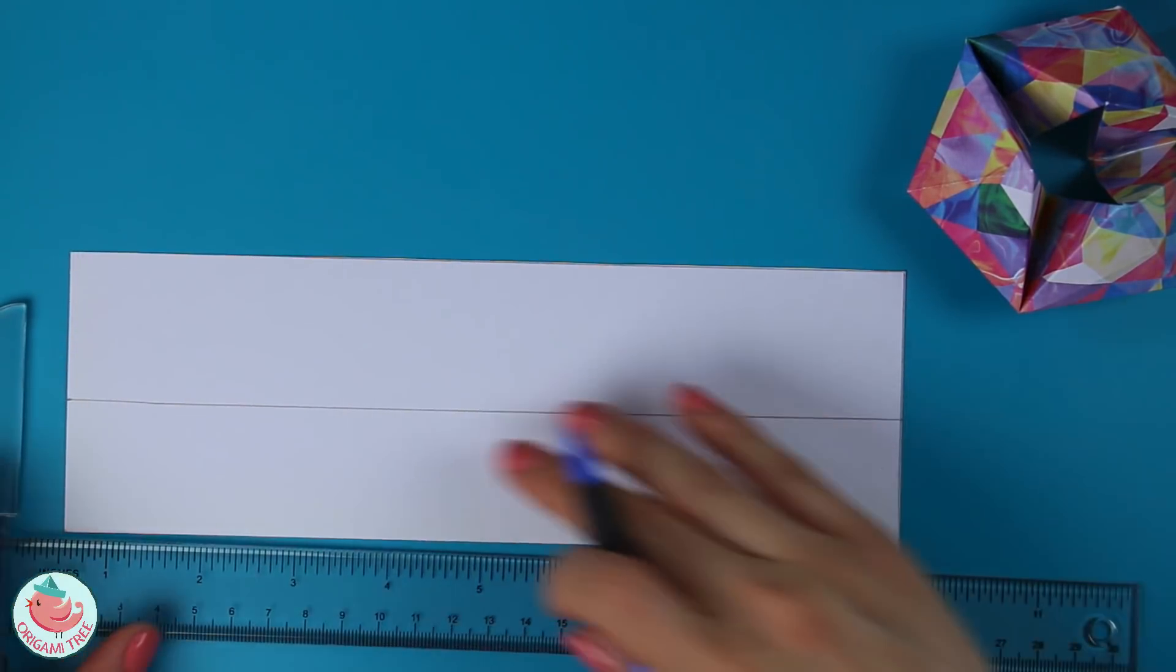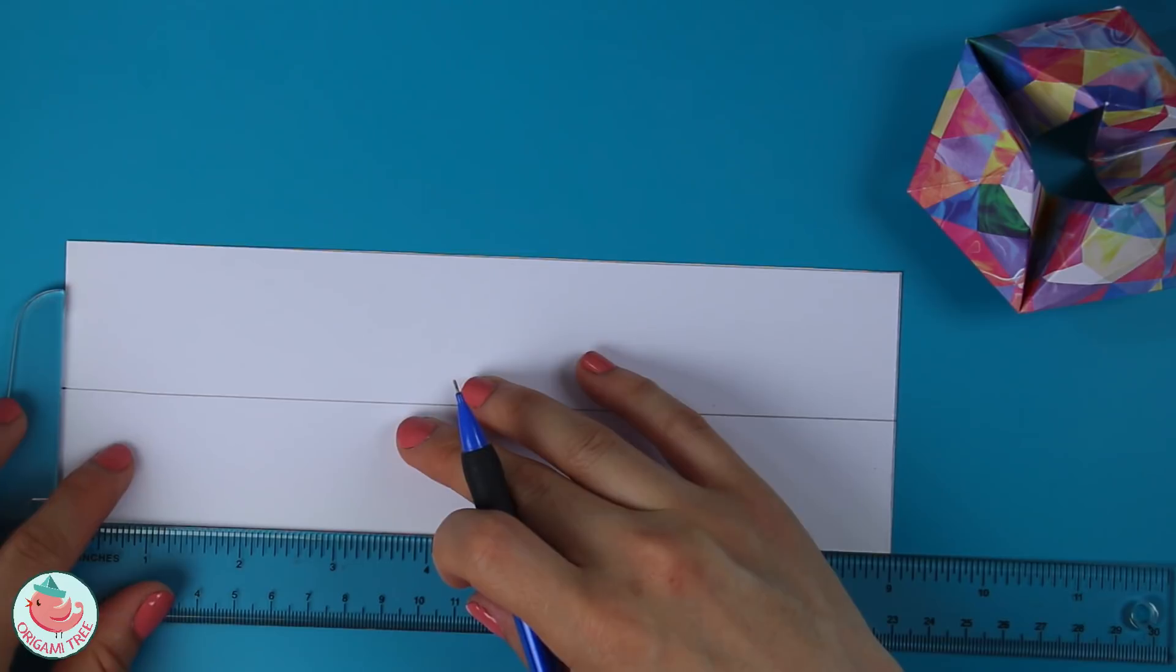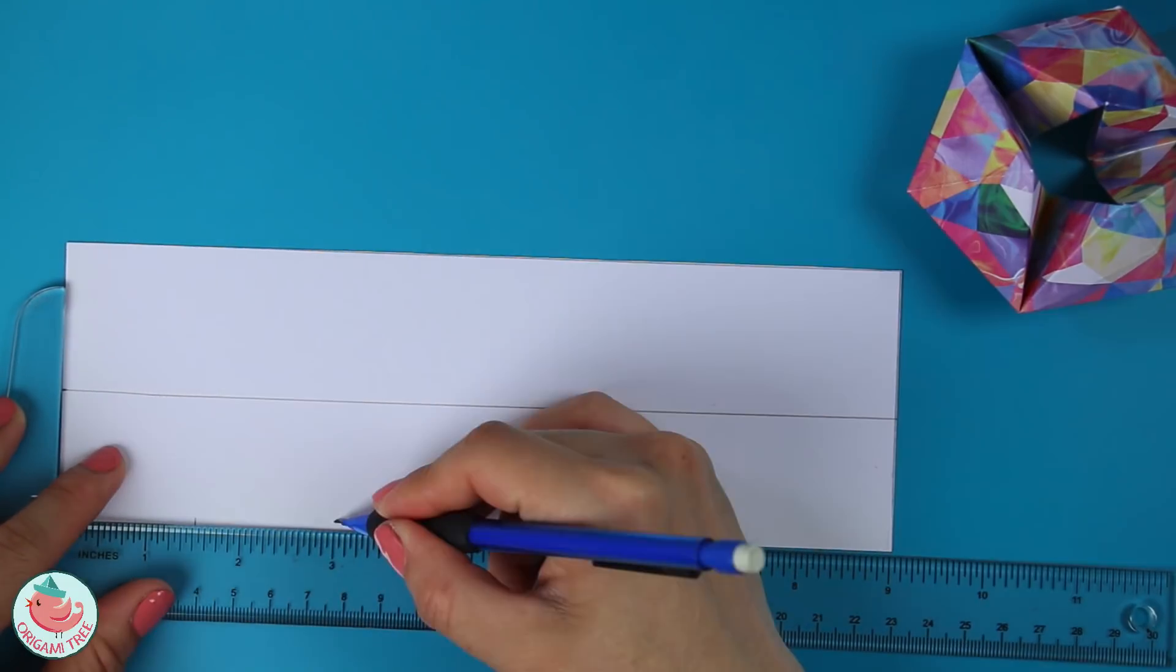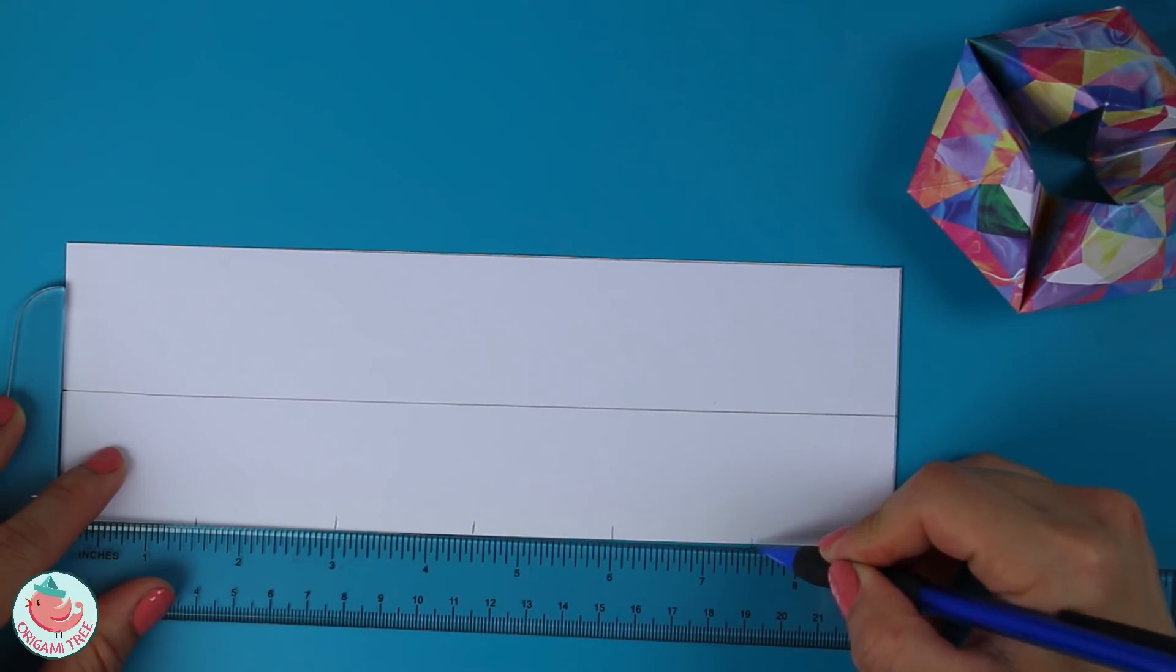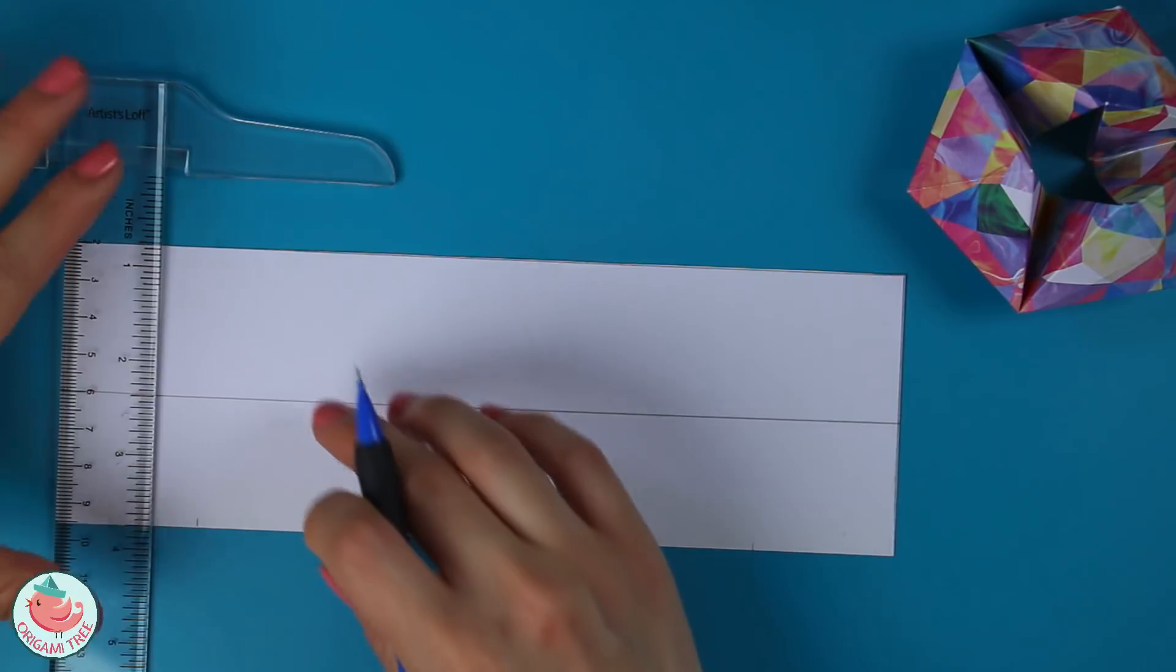Now from the left to right side I'm going to mark off every one and a half inches. So that's one and a half, three, four and a half, six, and seven and a half. Then draw vertical lines at those points.